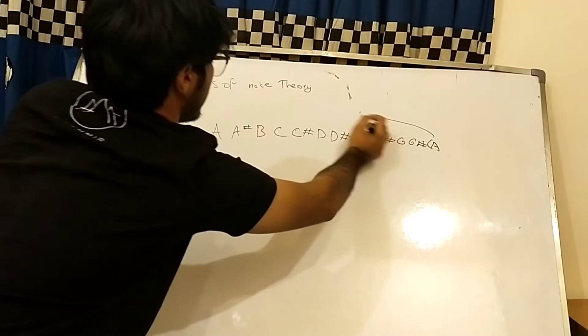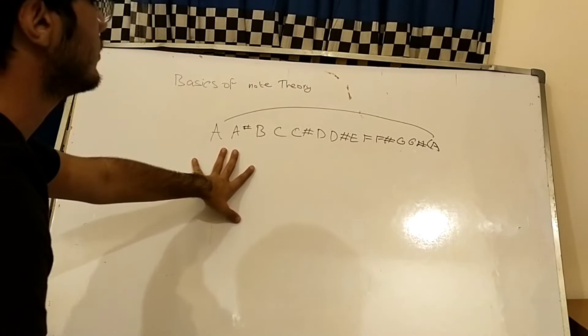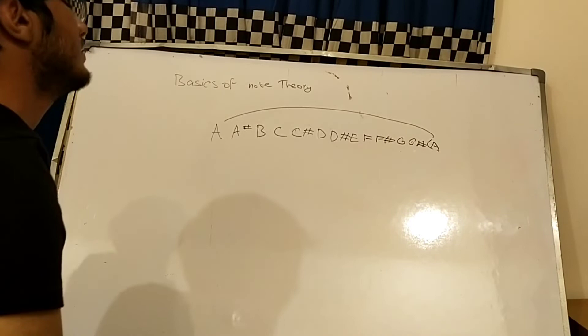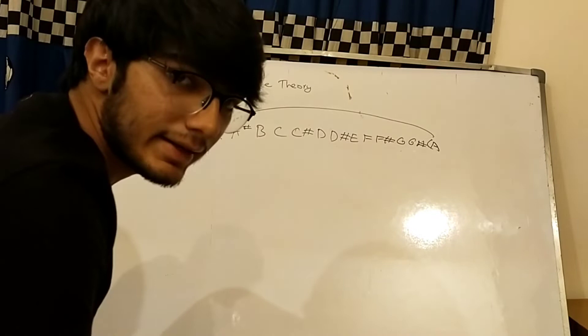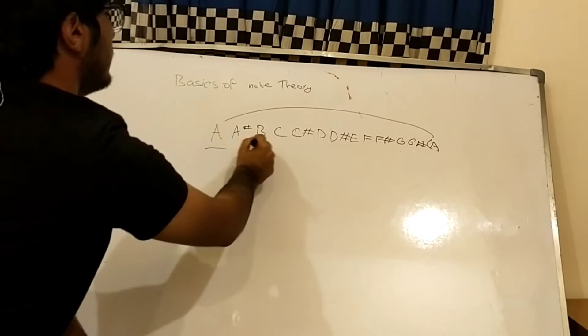So basically, all Western music comprises of only these 12 notes: A, A sharp, B, C, C sharp, D, D sharp, E, F, F sharp, G, G sharp, and A. So the notes A, B, C, D, E, F, G, they're called natural notes.